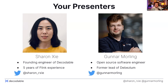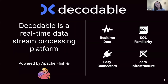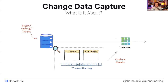So why are we here? We work as software engineers at Decodable, which is a real-time stream processing platform based on Apache Flink — you'll see it later in action. The primary interface is SQL, so you define your flows in SQL. There are integrations with all kinds of connectors like Debezium and others. That's the motivation for talking about Flink stream processing and these topics.